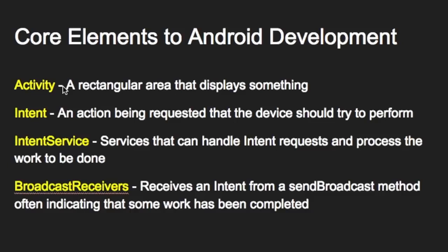Those buttons are rectangular and they display something, so they too are activity objects — just more specifically buttons, or they could be text views or whatever. The second thing is: what is an intent? An intent is an action that's being requested or we want to have performed. It could be part of a process in our code, or it could be a user interaction like a tap or a swipe.